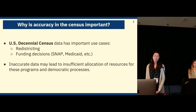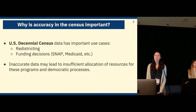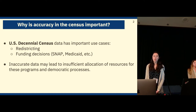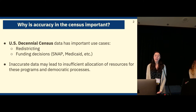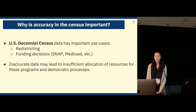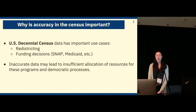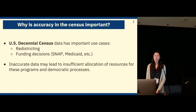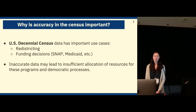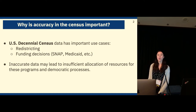The U.S. Decennial Census involves collecting demographic data about people living in the U.S. This data includes fields such as age, sex, and race, and has many important use cases such as redistricting and funding decisions such as SNAP, Medicaid, and Community Mental Health Services. For these high-impact use cases, data accuracy is especially important, since inaccurate data might lead to insufficient allocation of resources for these programs and for democratic processes.